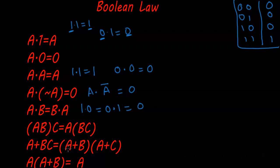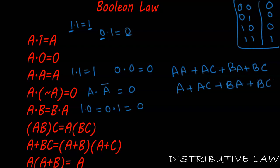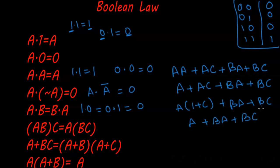Moving to the Associative Law: we can switch the grouping and the output remains the same. Next is the Distributive Law. Opening the bracket (a plus b)(a plus c), we get a·a plus a·c plus b·a plus b·c. Now a dot a equals a by the Idempotent Law, so we have a plus ac plus ba plus bc. Taking a common: a(one plus c) — and one plus c equals one — so we get a plus ba plus bc. Taking a common again: a(one plus b) plus bc, and one plus b equals one, giving a plus bc.